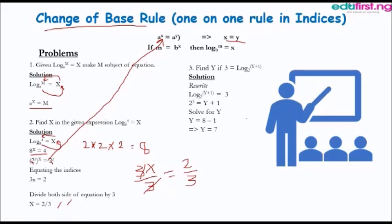Problem 3 says: find Y if 3 equals log of (Y plus 1) to base 2. We rewrite the equation — the base is 2, raised to power 3, equals Y plus 1. Since 2 raised to power 3 is 8, we have 8 equals Y plus 1. Moving the 1 across the equality sign gives minus 1, so Y equals 8 minus 1, which equals 7.